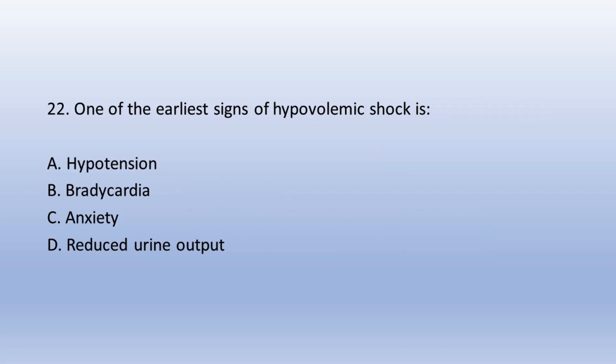Question 22. One of the earliest signs of hypovolemic shock is: A. Hypotension, B. Bradycardia, C. Anxiety, D. Reduced urine output. The answer is C. Anxiety.